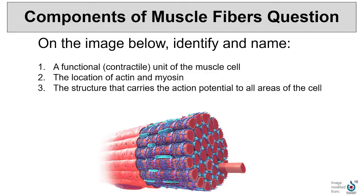We'll talk more about how sarcomere and muscle fiber contraction contributes to changing the whole muscle in an upcoming video about types of contraction. For this question, I'd like you to point out and write the name of the following structures: the first is a functional unit of a muscle cell; the second, the location of actin and myosin within that cell; and third, the structure that carries the action potential to all areas of the cell. Take a few minutes to label the parts of this image and write down what you remember. When you're ready, let's discuss. For number one, a functional unit or contractile unit — that's going to be a sarcomere.